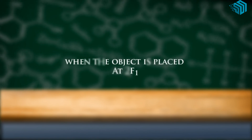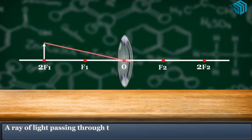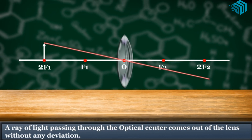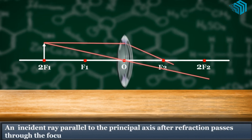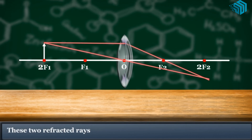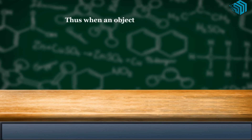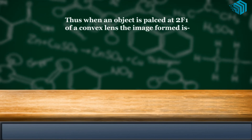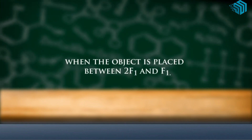When the object is placed at 2F1, we consider two rays coming from a point: a ray passing through the optical center without any deviation, and a ray parallel to the principal axis which after refraction passes through the focus. These two refracted rays meet at 2F2. Thus, when an object is placed at 2F1 of a convex lens, the image formed is at 2F2 — real, inverted, and the same size as the object.